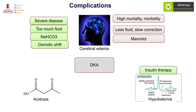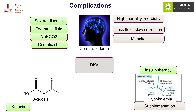Hypokalemia typically happens with insulin therapy, so one needs to be cautious in individuals who have low potassium to begin with. If potassium levels are below 3.5, insulin therapy should be deferred. Similarly, if hypokalemia develops during treatment of DKA, it is better to decrease insulin and add potassium supplementation.